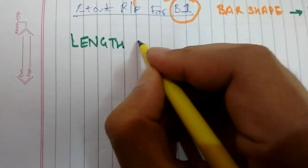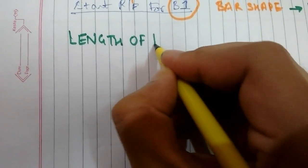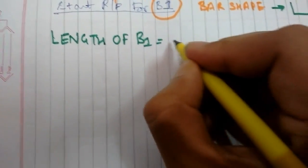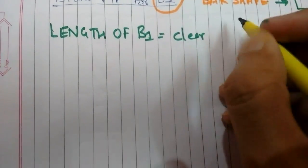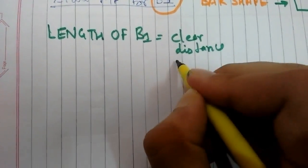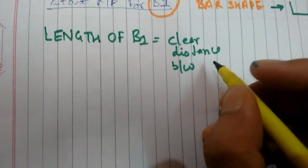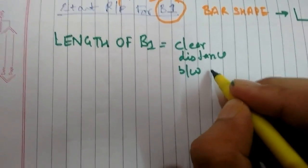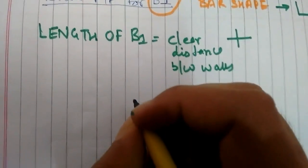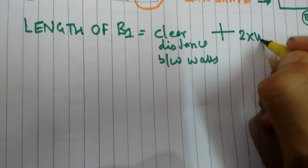Length of B1 equals clear distance between walls plus two times width of walls minus two times bar cover plus two times X.